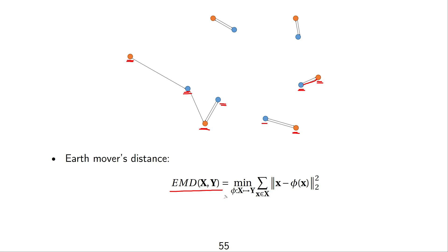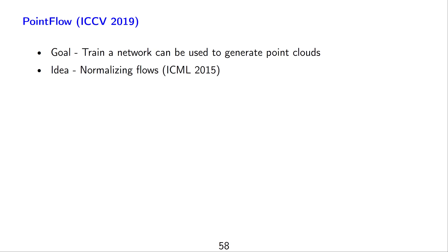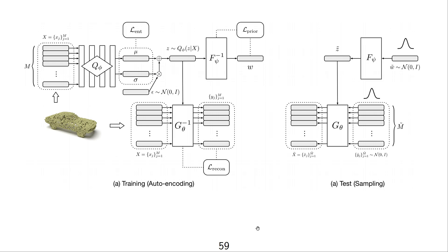An exciting paper is PointFlow, which is a from-scratch generation algorithm. GANs for points were not very successful, but adapting flows proved more promising. Flows are less successful for images, but for point clouds they seem more promising than GANs. We didn't discuss flows in this lecture, so we'll just show the architecture for inspiration.